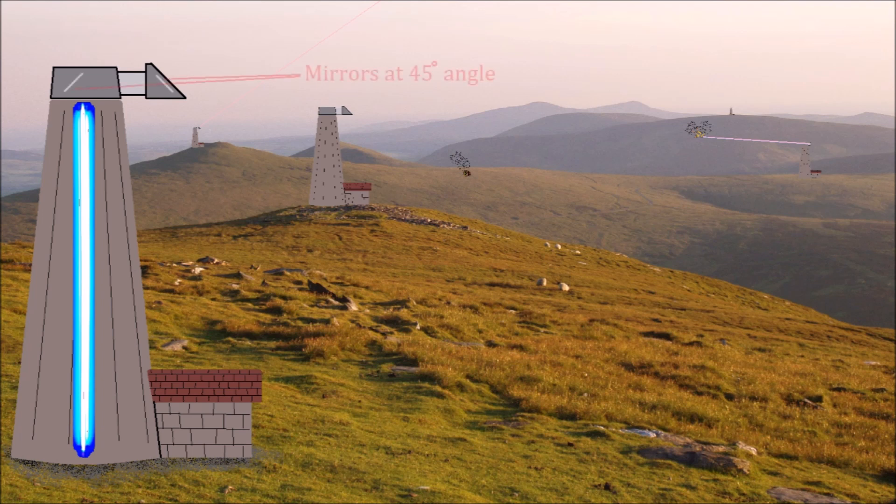At the top, there is a turret with two mirrors at 45 degree angles to carry the beam outside of the tower. The two mirrors pivot on two axes so that the beam can be pointed in any direction.